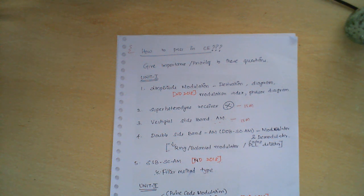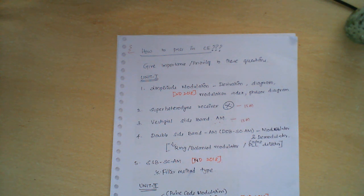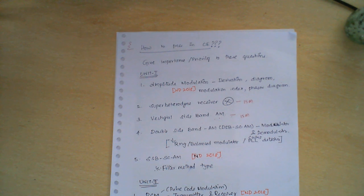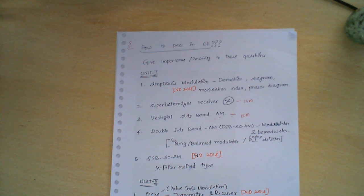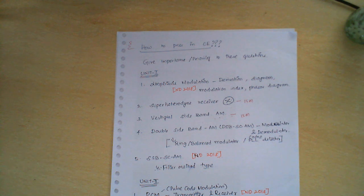Dear students, welcome to my channel. In this session I am going to give you some tips to pass in the CE exam, that is Communication Engineering paper EC 8395, coming under the regulation of 2017 for second year Computer Science. Starting from Unit 1, based on the previous year question paper, I have arrived at some five questions which you should give priority to study, and then concentrate on the remaining questions later.